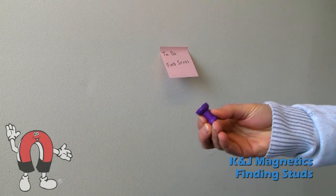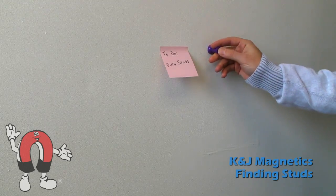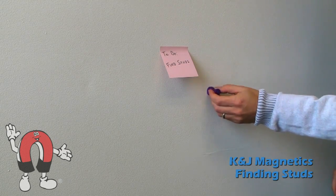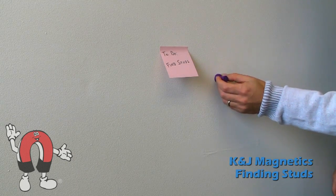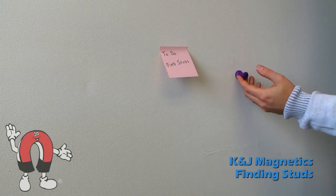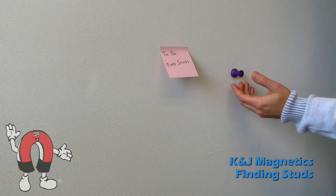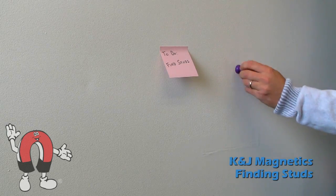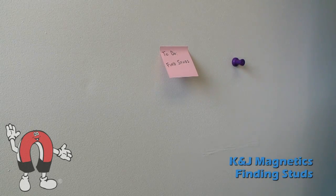We start using this large magnetic thumbtack on which we put a piece of scotch tape. We use the tape there since the exposed metal of the magnet could scratch your wall. You simply slide it around the wall until you find one of the screws that hold the drywall to the studs.